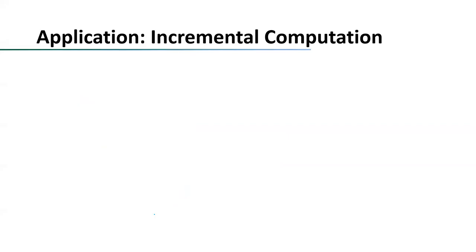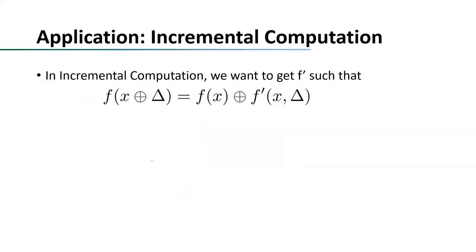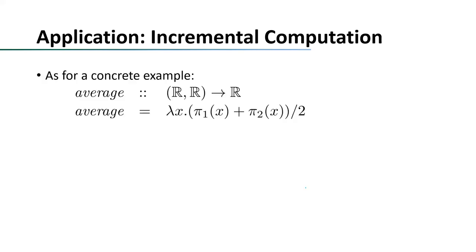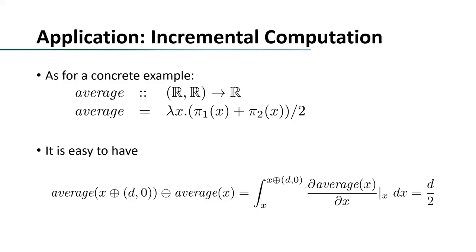Here is an application of the Newton-Leibniz formula to incremental computation. In incremental computation, we want to know how much the result will change if we change the argument of a function by a little bit. By the Newton-Leibniz formula, it is easy to see the change function can be written as the integration of its derivative. As a concrete example, the function average calculates the average number in a tuple. If we update the first element of the tuple by d, applying the Newton-Leibniz formula and several reduction rules, it is easy to see the result is half of d.